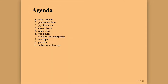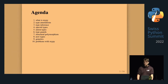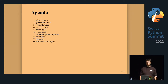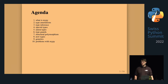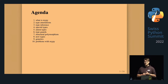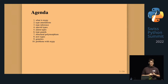We'll start briefly with what mypy itself is, then go through type annotations, type inference, some special types that mypy has, union types, guard types, structural polymorphism, new types, and at the end generics. Then I'll tell you what problems you can encounter while using mypy in your projects.